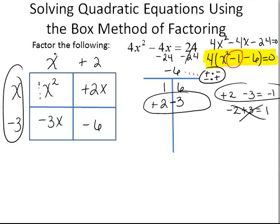So now, here are my factors. Now, recall that I had factored out a 4 from the very beginning. So I have x plus 2 times x minus 3.